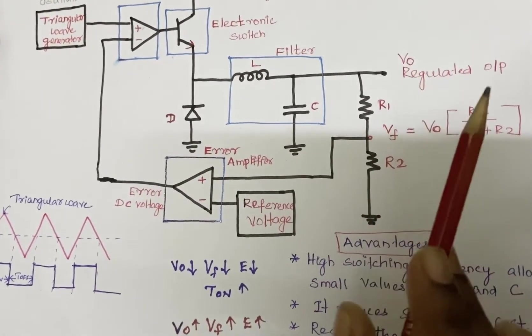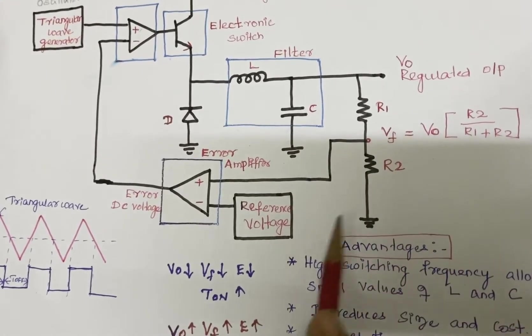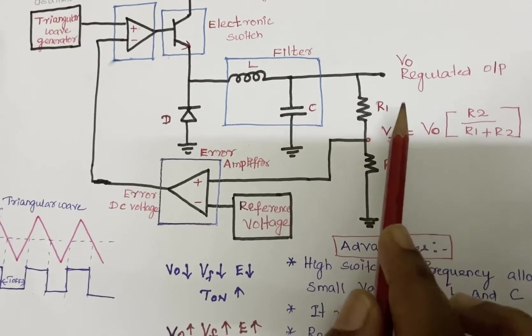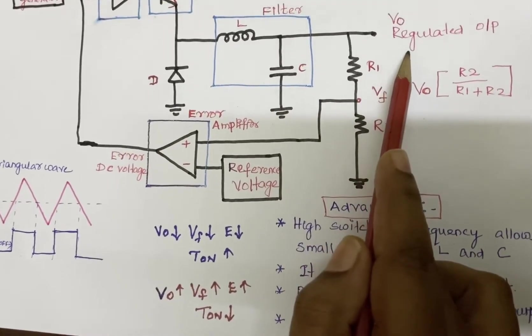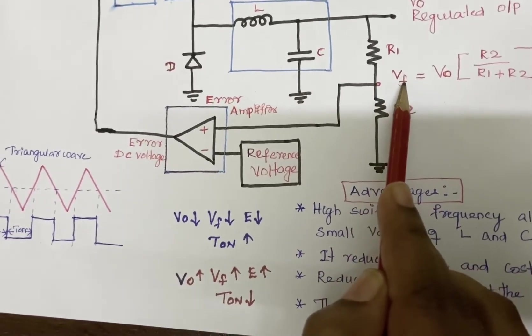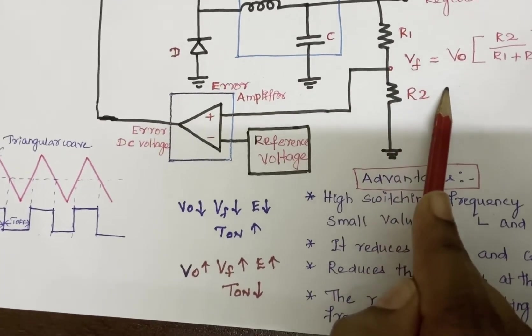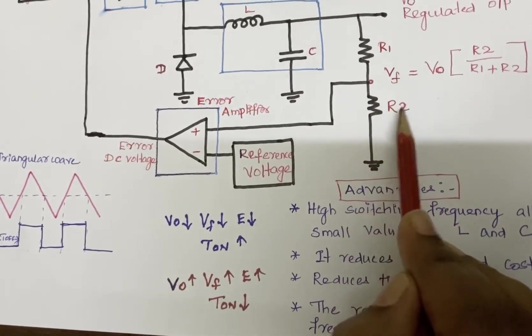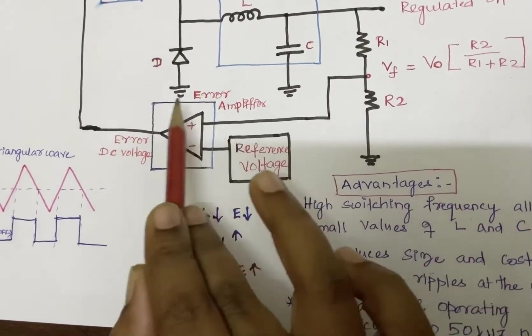Case two: Vo increases. So Vo is increased, the feedback voltage Vf, which is the voltage across R2, can be calculated: Vo times R2 divided by total resistance R1 plus R2, which is given to the error amplifier. So Vo increases, Vf increases, thereby increasing the error voltage.